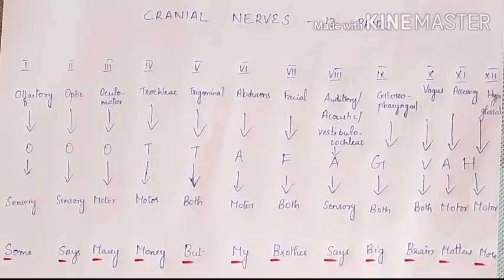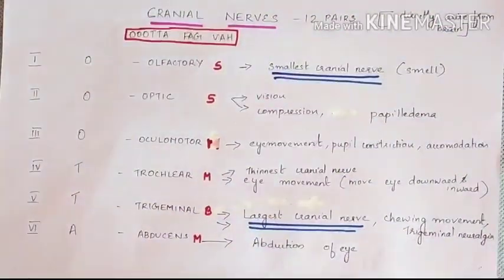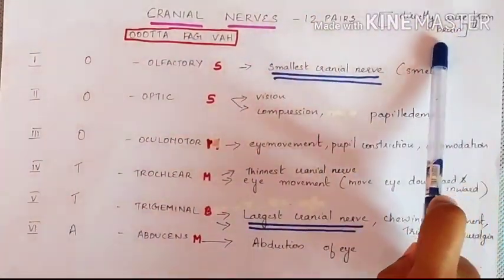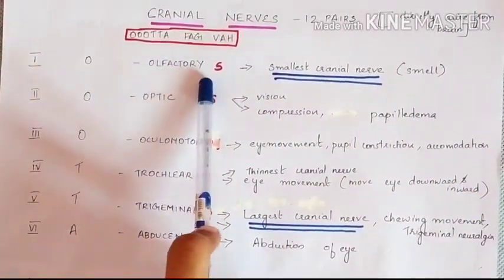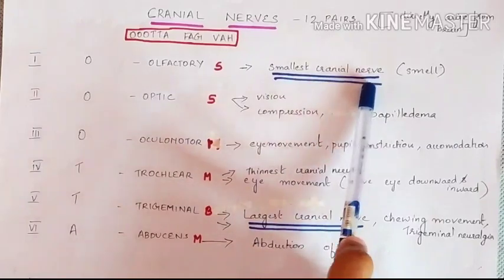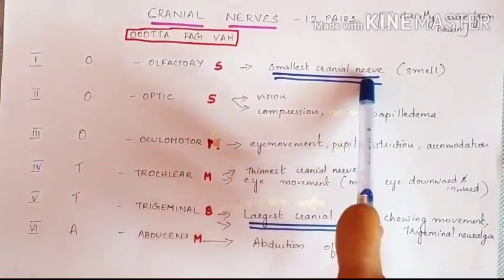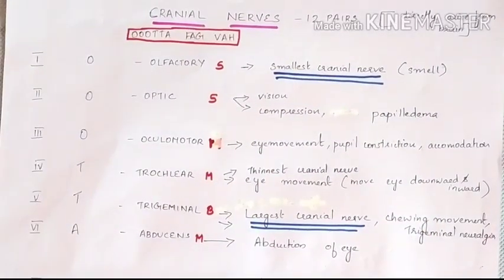Now let us discuss each cranial nerve in detail. The 12 pairs of cranial nerves arise directly from the brain. The first cranial nerve is the olfactory nerve, which is a sensory nerve. It is the smallest cranial nerve and it helps to sense smell.